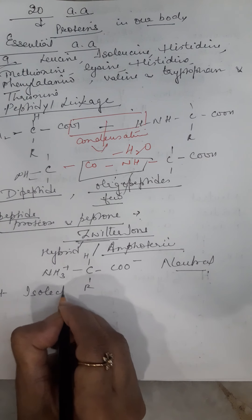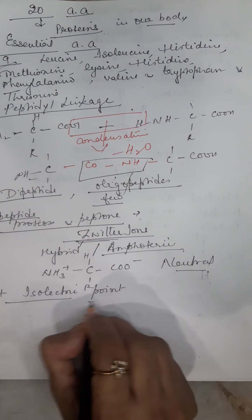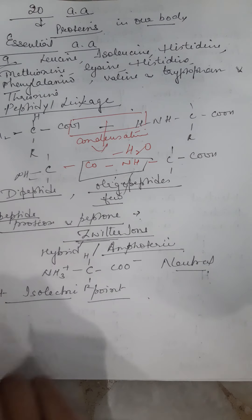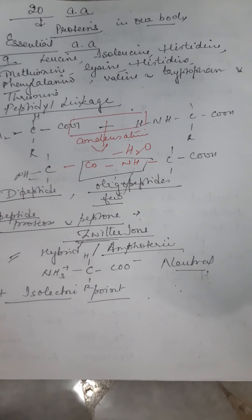At isoelectric point - this is the specific pH at which this zwitter ion exists as a neutral ion.